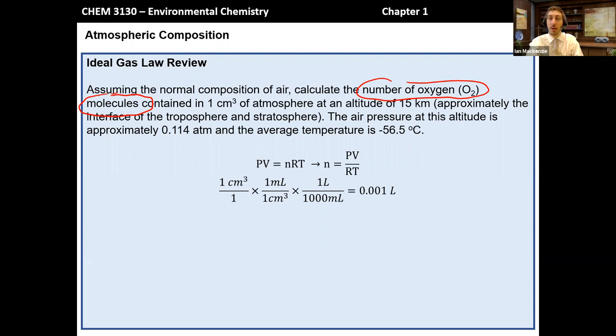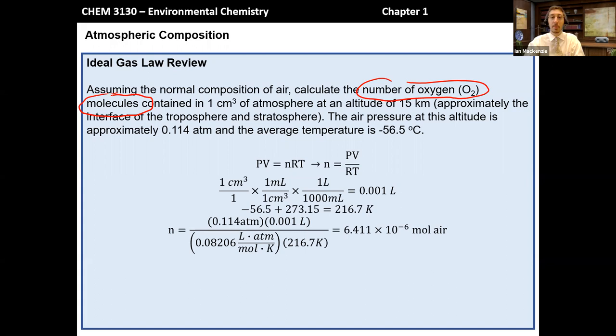Additionally, we've got to take the temperature and convert that to an absolute scale. So we have Celsius plus 273.15 to get us to Kelvin. We end up with 216.7 Kelvin. And then we have now our volume in the right units, pressures in the right units, temperatures in the right units. We can simply plug everything in and we'll come out with 6.411 times 10 to the minus 6 moles of air.